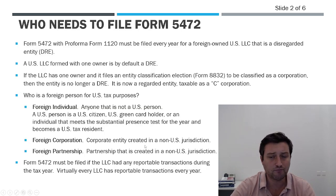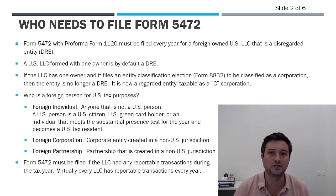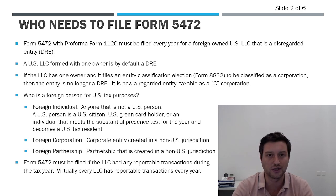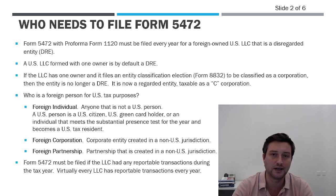So let's move to the first slide. Who needs to file this form? Form 5472 is filed with a pro forma 1120, and this is filed if you have a U.S. LLC that is disregarded from its owner and the owner is a foreign person. When you form an LLC in the United States with one owner, it is by default a disregarded entity. The entity legally exists under state law — you can enter into contracts, open bank accounts, the entity can be sued, it can provide liability protection — but from a tax perspective it's almost completely transparent. All income and expense basically flows through to the owner, and that person is the one reporting income, expense, and paying any tax. Now, if the LLC has one owner and files an entity classification election to be taxed as a C-Corp, it's no longer a disregarded entity.